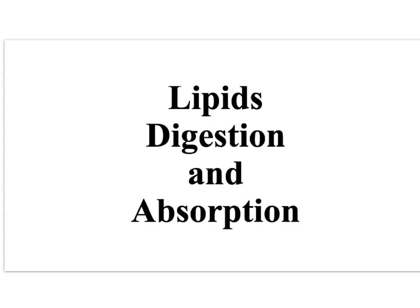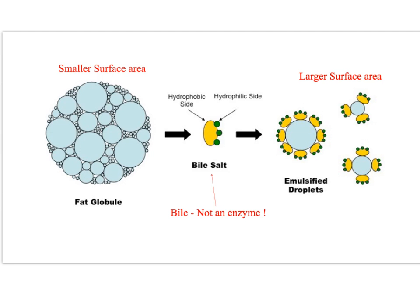This is about lipid digestion — the hydrolysis of triglycerides and the absorption into the lymphatic system. Fats that you consume tend to accumulate as large fat globules because they're hydrophobic; they want to escape from water. This large molecule has a very small surface area, so it's not easy for enzymes to come in and break ester bonds in the middle of these fat globules.